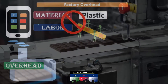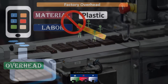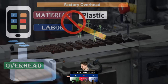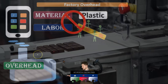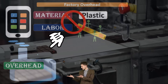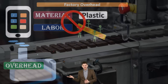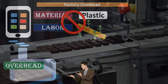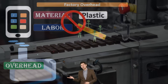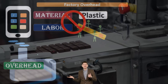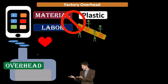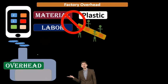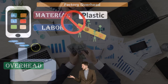With direct materials and direct labor, we know exactly which job was worked on or which process was worked on. In terms of overhead costs, we are not so sure. So how are we going to apply them out if we don't know exactly where they should go? We'll put them into overhead and then use some type of estimate to apply them to the specific job or process.